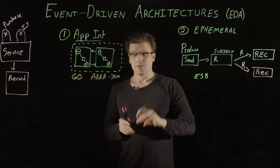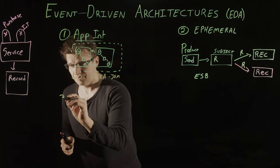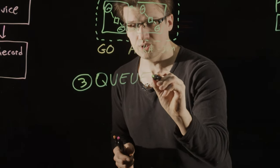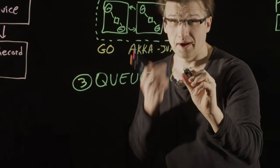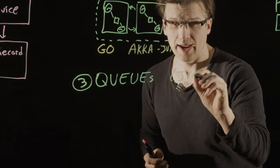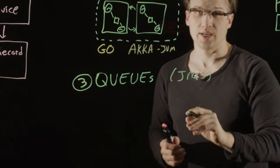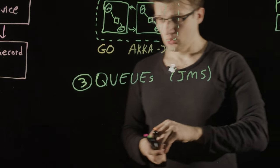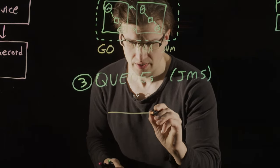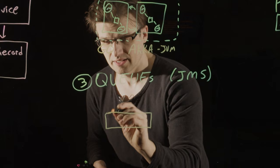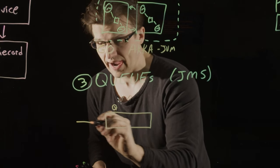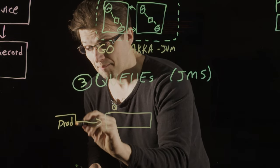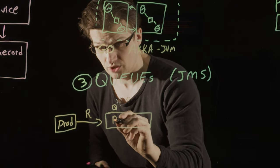And the third type we're going to look at is queues. And in this case, we're looking at queues in the style of JMS, which is a Java message service. A queue is an ordered, append-only list.